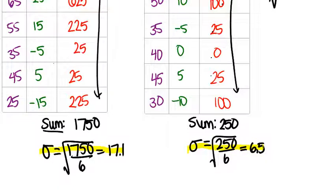So what this means is for Brand A, 68% of the data is within 17.1 months of the mean of 40 months. So that's pretty spread out, whereas for Brand B, 68% of the data was within 6.5 months of the mean of 40 months.